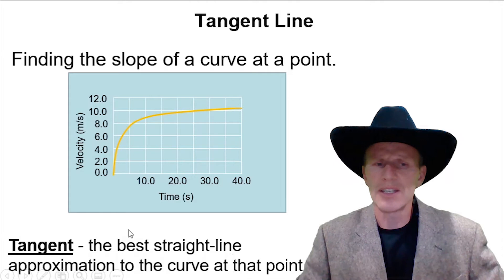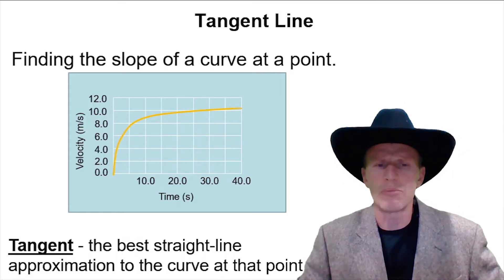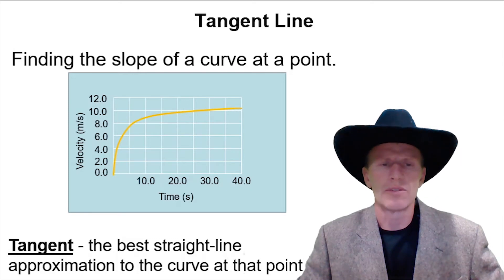The tangent's definition is the best straight line approximation to the curve at a certain point. It looks like a line drawn right next to the curve, and the line just continued straight in both directions.